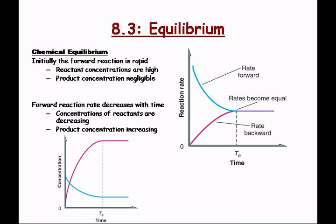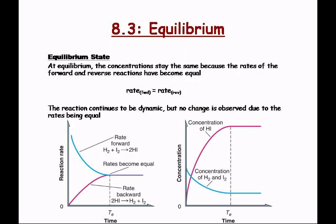If you notice here, the rates will become equal at the time the reaction gets to equilibrium. So the rate of the forward reaction is equal to the rate of the backward reaction. You can also see the concentrations of the product increasing quite significantly until equilibrium is established, the reactants decreasing quite substantially until equilibrium is established, and then the concentration stays the same for both. Even though the concentration stays the same, the reactants still go back and forth from reactants to products — the reaction continues to be dynamic, but no change is observed due to the rates being equal.